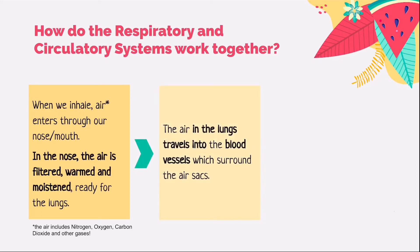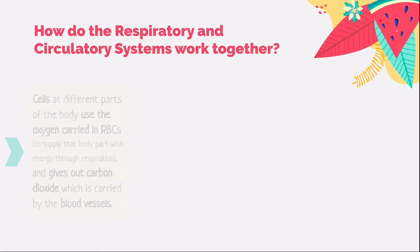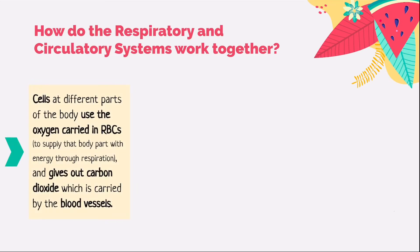Next, the air in the lungs travels into the blood vessels which surround the air sacs. The blood vessels transport oxygen and carbon dioxide as well as other gases to the heart, which pumps the oxygenated blood to the rest of the body. We call this blood oxygenated because it contains a much larger amount of oxygen than carbon dioxide. It is also useful to remember that oxygen is carried by the blood in small cells called red blood cells. Cells at different parts of the body use this oxygen to supply energy through respiration and give out carbon dioxide, which is carried back by the blood vessels.